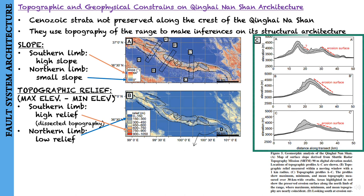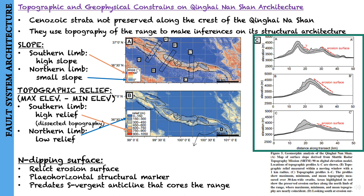Figure 5C presents three topographic profiles showing maximum, minimum, and mean topography over 30 km wide swaths. For the northern limb of the range, these three are nearly coincident. The authors interpret the broad, flat, slightly north-dipping surface along the northern side of the Qinghai-Nanshan as a relict erosion surface, representing a paleo-horizontal structural marker that predates growth of the south-vergent anticline coring the range, making it a key constraint on the structural relief of the Qinghai-Nanshan.